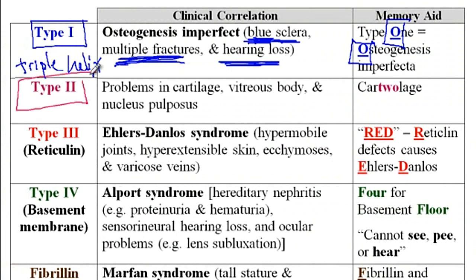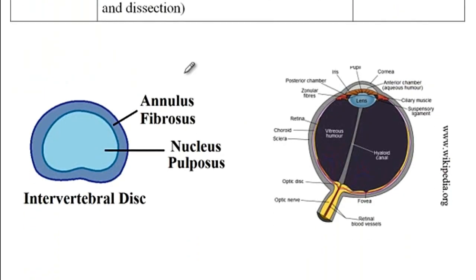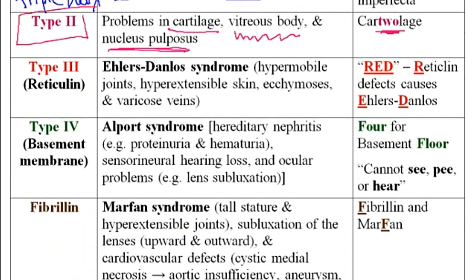The next disorder is due to a defect in collagen type 2, which is required for the formation of cartilage. The memory aid is that collagen type 2 is required for the formation of cartilage. There is also a problem with the vitreous body, as well as the nucleus pulposus, both of which are made of collagen type 2. Here we have the intervertebral disc with the nucleus pulposus in the center, made of collagen type 2, and the vitreous body is also made of collagen type 2.